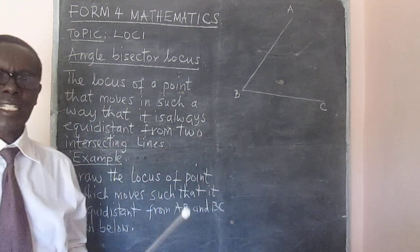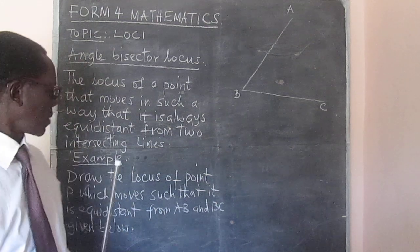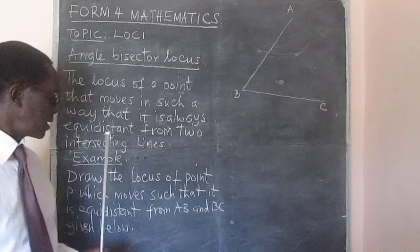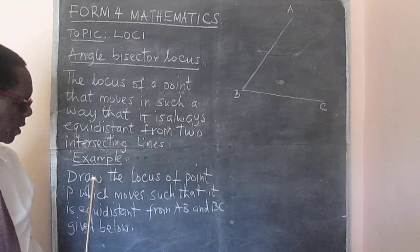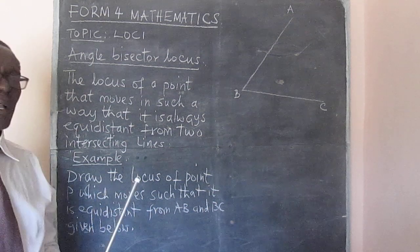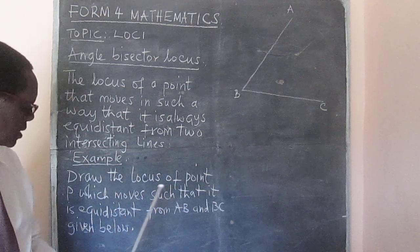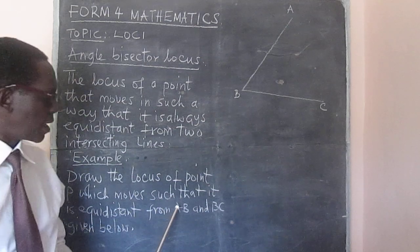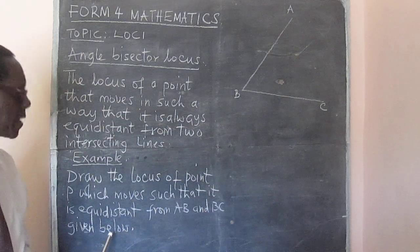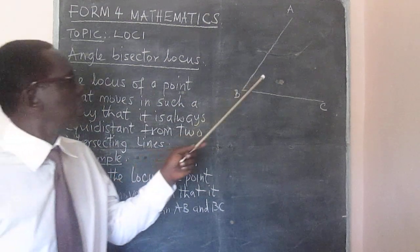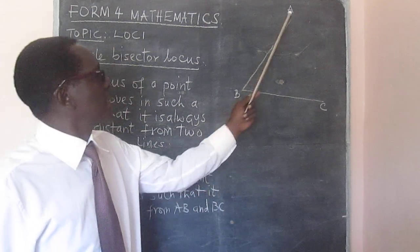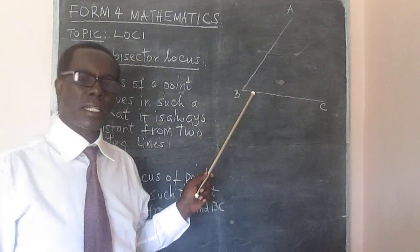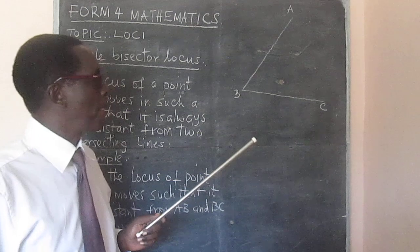In our example, we are told to draw the locus of a point P which moves such that it is equidistant from two lines AB and BC. When we look at the given lines, we see that AB and BC are intersecting at point B.